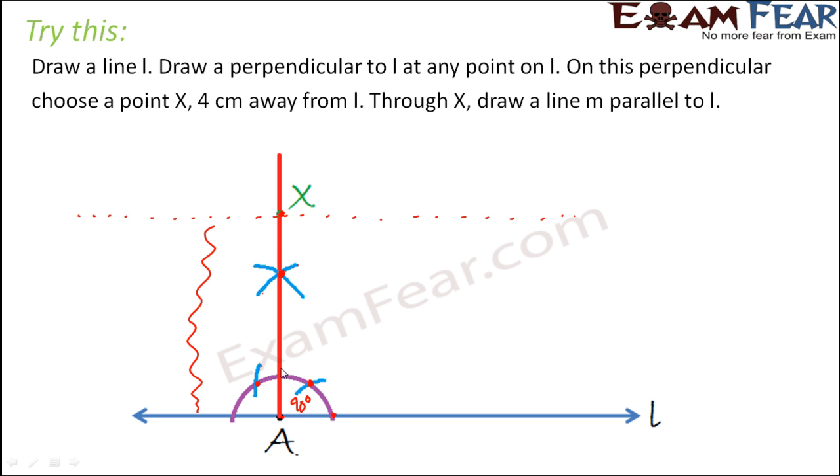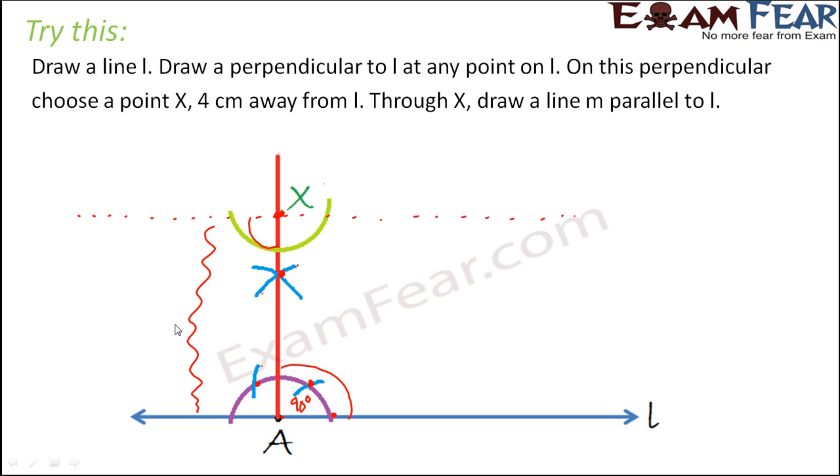So basically this angle should be equal to 90 degrees. Right? So that's what we mean. So we need to ensure that this angle is 90 degree. So for that, what do we do? We follow the same process. So we draw an arc here considering this point X as the center. Now we measure this angle. So this angle is 90 degree. Anyways, we measure it using a compass. Now we make sure that the opening of the compass remains the same.